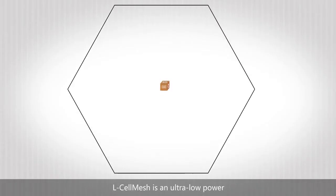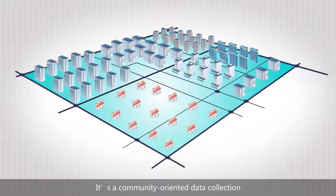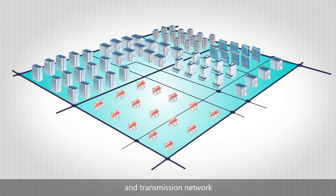L-Cell Mesh is an ultra-low-power wireless self-organizing mesh system. It can act as the core of a wireless sensor network. It's a community-oriented data collection and transmission network.